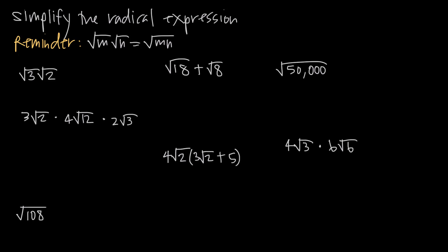In this video we're talking about radical multiplication or square root multiplication and we've been asked to simplify various radical expressions. The formula we're going to need is that the square root of m times the square root of n equals the square root of m times n. When you have two square roots multiplied together you can take the values inside those square roots and put them together under one square root. We'll use this formula going both directions.